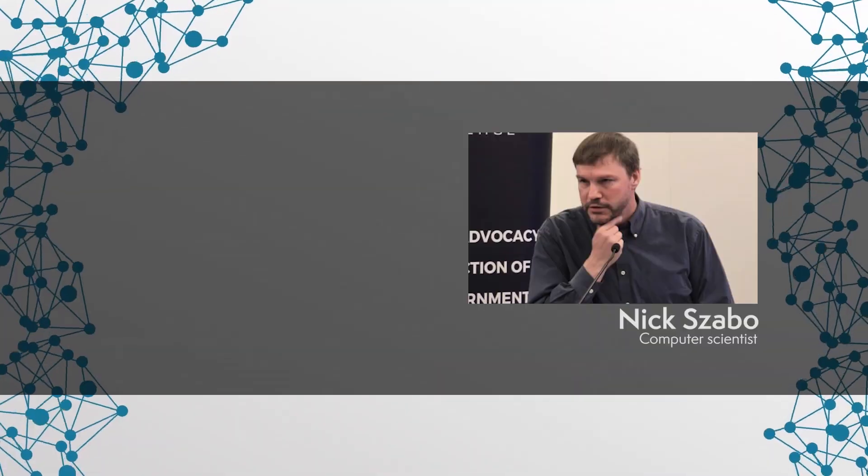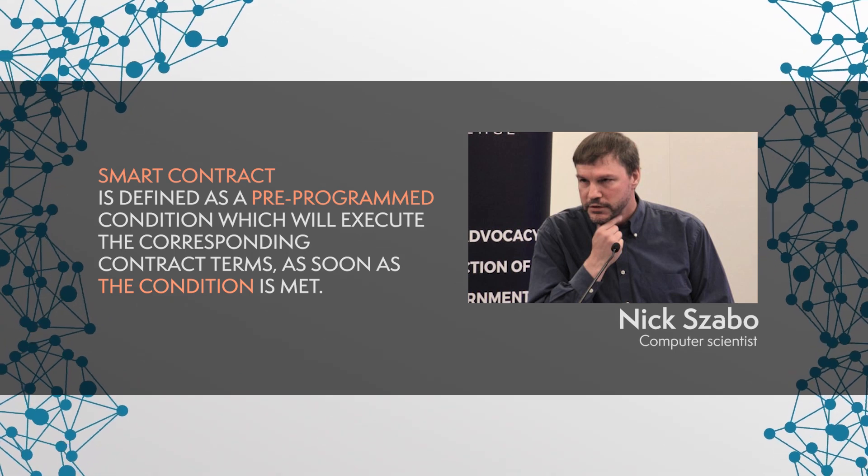All your transactions and belongings are signed with your digital identity in the network, creating an accurate and fraud-proof record of your actions. Let me come to the last component of NEO's smart economy: smart contracts. Smart contracts, as you might already know, were first proposed in 1994 by Nick Szabo. In his definition, a smart contract is defined as a pre-programmed condition which will execute the corresponding contract's terms as soon as the condition is met. NEO's smart contract system is called NEO contract.